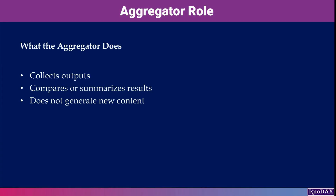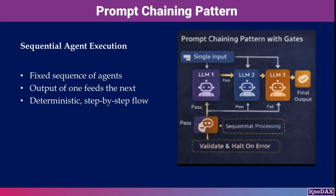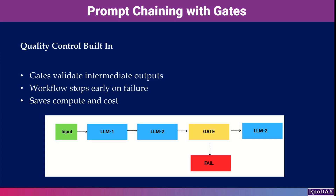The aggregator's role is simple: it collects, compares, or combines outputs — it doesn't generate new content, it just consolidates results. Prompt chaining is another well-known pattern. Here, agents process tasks in a fixed sequence where each agent consumes the output of the previous one. What makes this pattern more robust is the ability to insert gates or checks between steps.